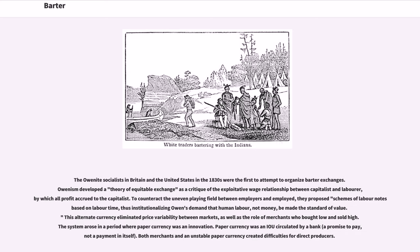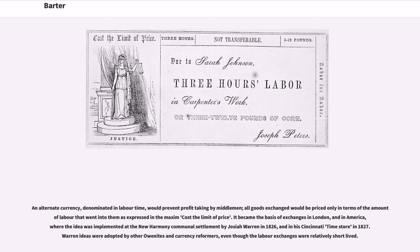Paper currency was an IOU circulated by a bank — a promise to pay, not a payment in itself. An alternate currency, denominated in labor time, would prevent profit taking by middlemen; all goods exchanged would be priced only in terms of the amount of labor that went into them, as expressed in the maxim 'cost the limit of price.' It became the basis of exchanges in London, and in America, where the idea was implemented at the New Harmony communal settlement by Josiah Warren in 1826, and in his Cincinnati Time Store in 1827. Warren's ideas were adopted by other Owenites and currency reformers, even though the labor exchanges were relatively short-lived.